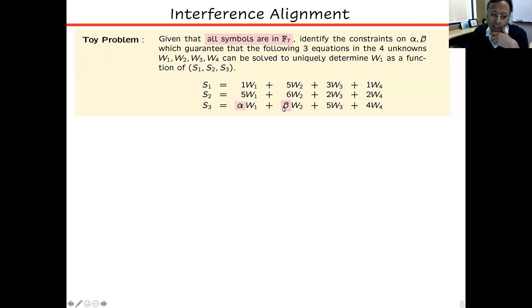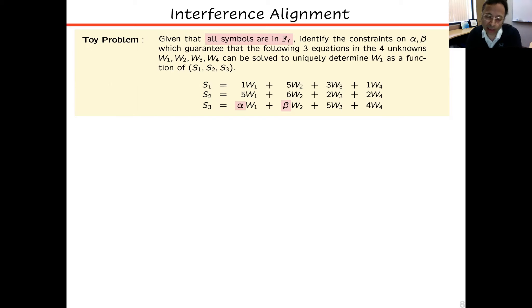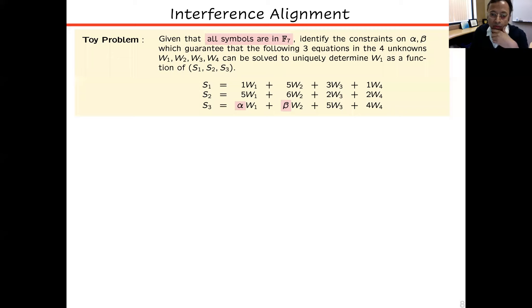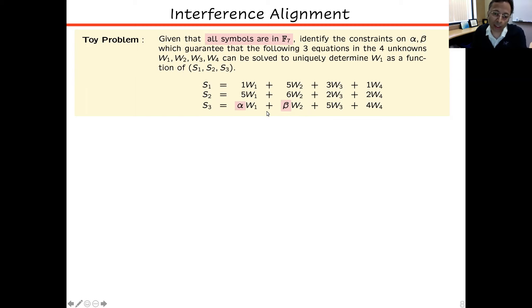In general, you shouldn't expect to be able to solve for four unknowns from three equations, and that's why we need interference alignment. Notice that this set of equations allows some control in terms of parameters alpha and beta that we're free to choose. The typical problems where I see these equations are problems where I have some control — maybe I designed the coding scheme or what download I'm requesting from a server. So in this toy example, let's suppose we can control alpha and beta, and we want to choose them so that from these three equations we can solve for w1.